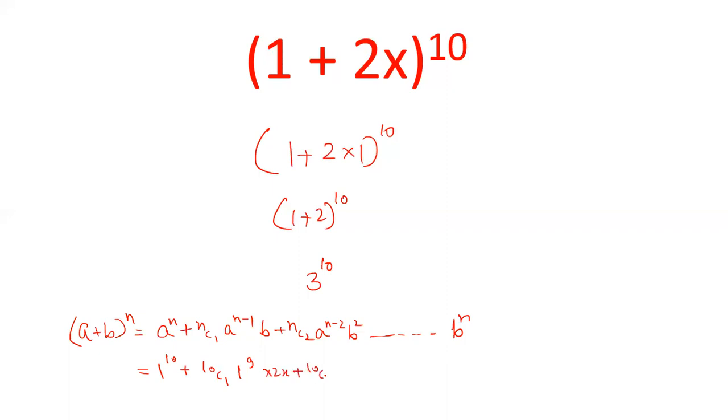+ ¹⁰C₂·1⁸·(2x)², and so on, till we get (2x)^10. The coefficients when added will give the answer as 3^10.